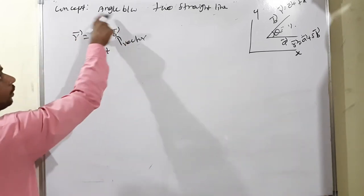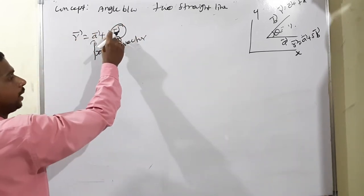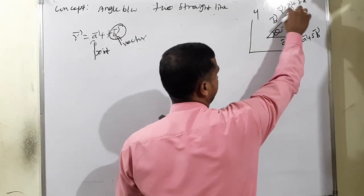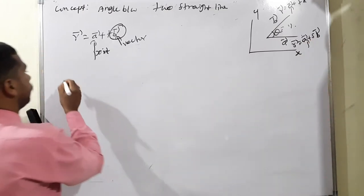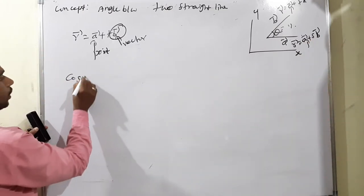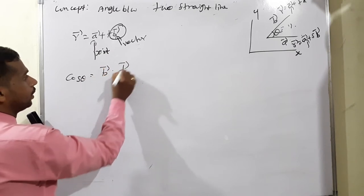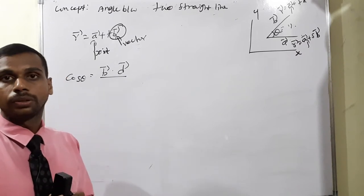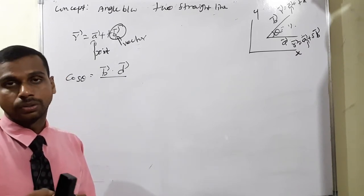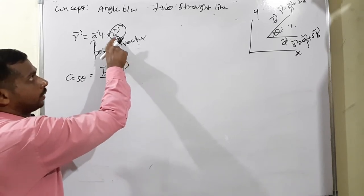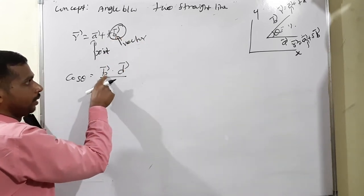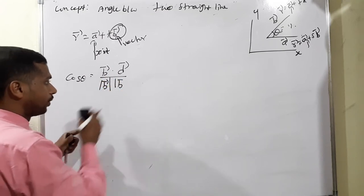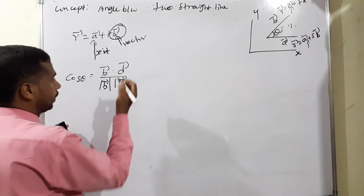If you need to find the angle between the lines, you only look at the b and d parts — not at a and c vectors, because a and c are just points. Therefore, the formula is: cos theta equals b vector dot d vector divided by modulus of b vector times modulus of d vector.